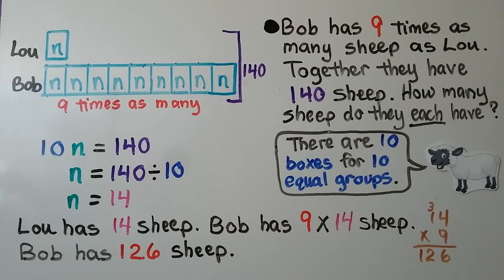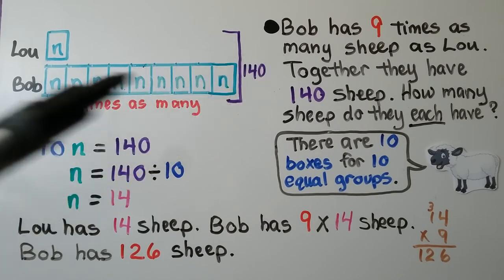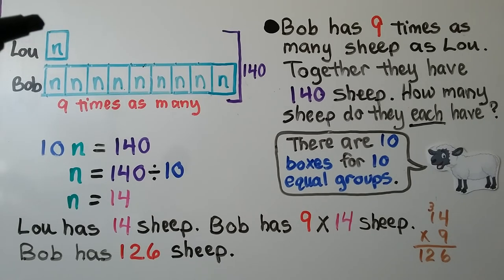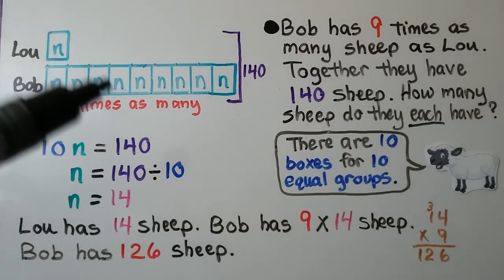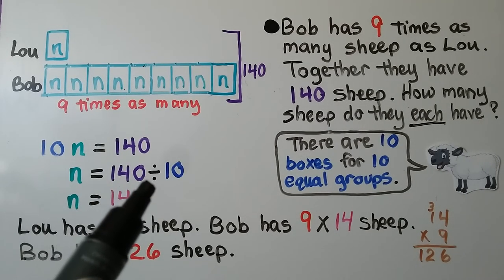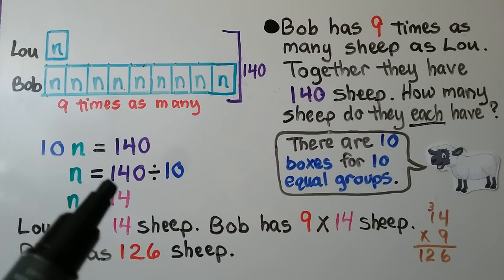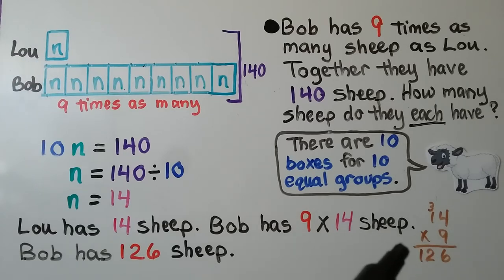Bob has nine times as many sheep as Lou. Together they have 140 sheep. How many sheep do they each have? Because Bob has nine times as many, Lou has the lesser amount — we make one box for Lou and nine boxes for Bob, giving 10 boxes for 10 equal groups altogether. That means 10 times n equals 140. Using the inverse operation, 140 divided by 10 equals n, which is 14. So Lou has 14 sheep, and Bob has nine times as many: 14 times 9 equals 126. Bob has 126 sheep.